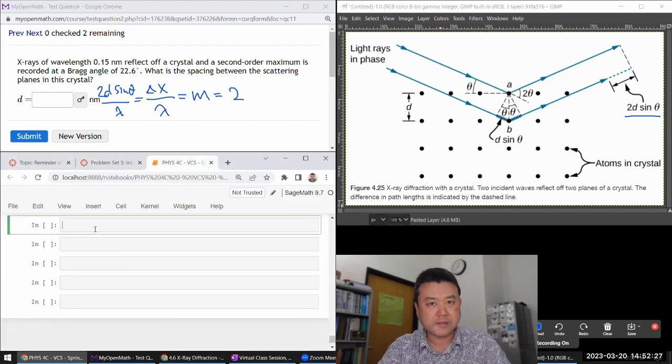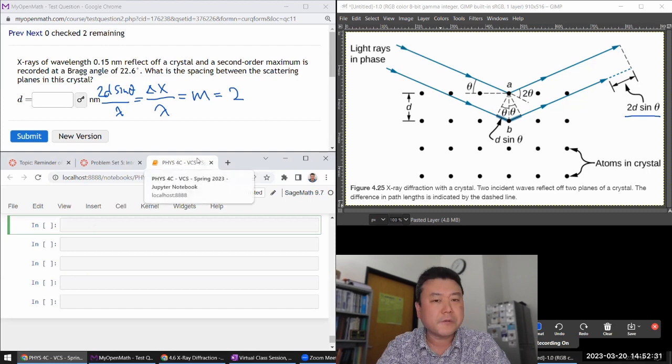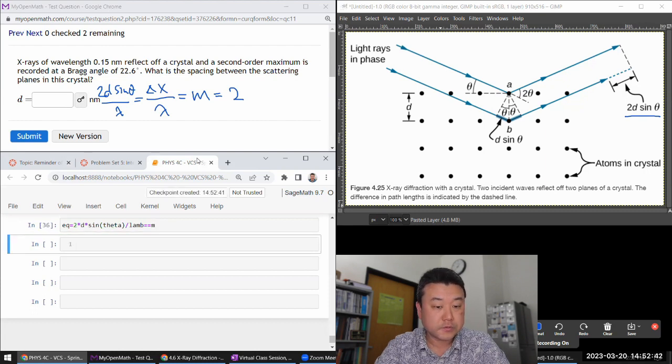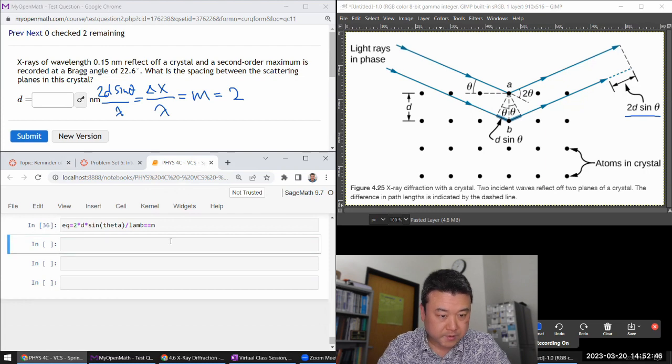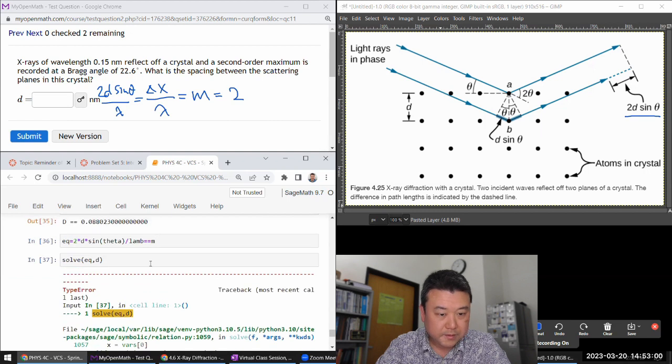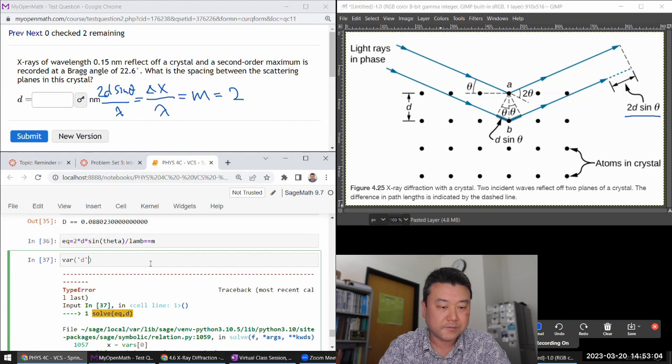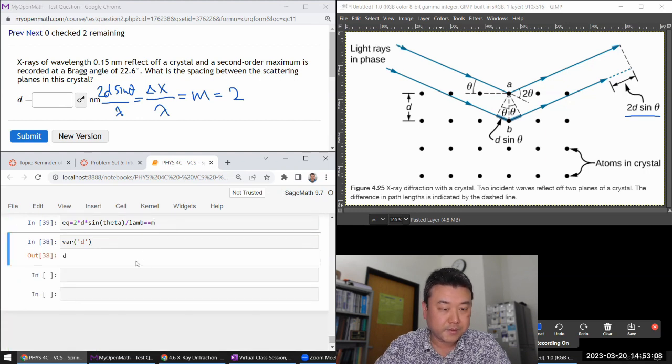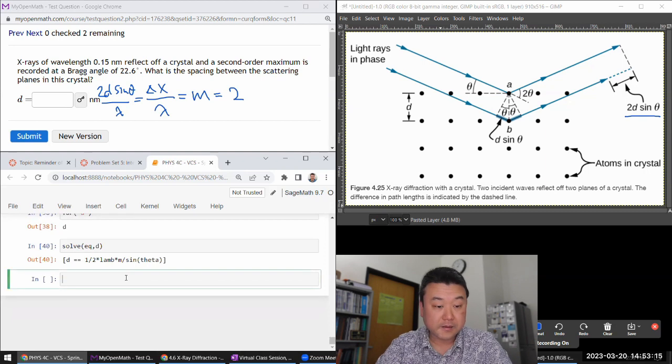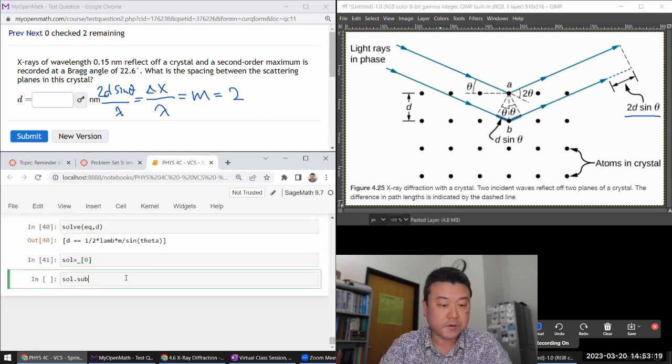Let me just do this in SageMath. So I have, I think I defined all these symbols before. So I have an equation of 2d times sin theta divided by lambda equals M for now, and I'm going to solve this for d, d is the separation. I overloaded d earlier, I think. So I have to re-declare d as my variable, and re-enter that, and then solve the equation for d. So here, I can just put this into a variable and plug in numbers.